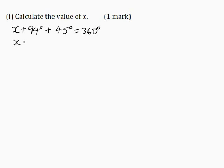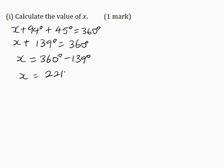So X plus 94 plus 45 is 139 degrees and this is equal to 360 degrees. So X, taking the 139 across the equal sign it becomes negative, is 360 degrees minus 139 degrees. Therefore X is 221 degrees.